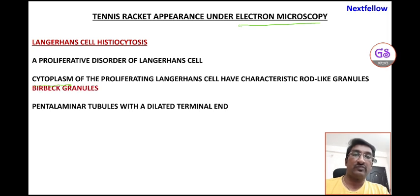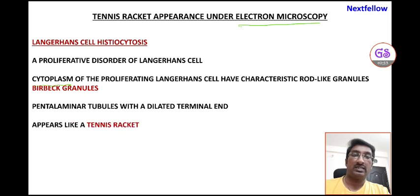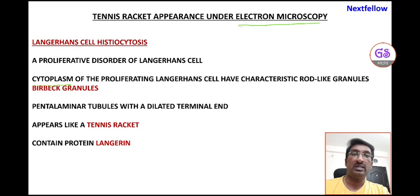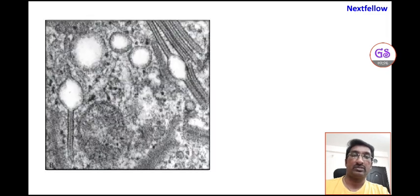Birbeck granules are pentalaminar tubules with a dilated terminal end. This dilated terminal end gives the granules a tennis racket appearance under electron microscopy. These granules contain a protein called Langerin. Tennis racket appearance under electron microscopy is characteristically seen in Langerhans cell histiocytosis, and the granule is called Birbeck granules.